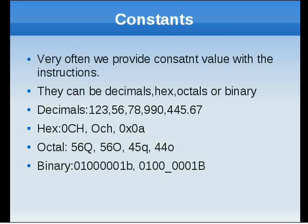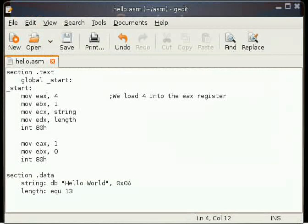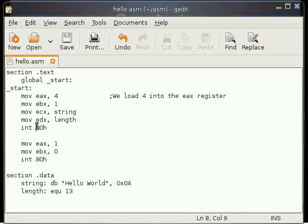You can include strings with double quotes or single quotes. So let's see in our code what we have. We have constant values. See, these are the decimals, so they are written plain and simple: 4 and 1. And we have some hex values for our interrupt, so we've written 80h.